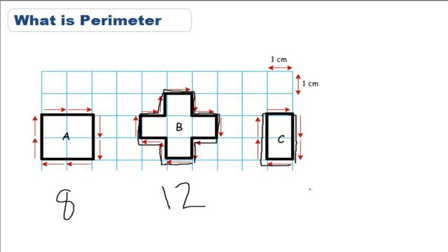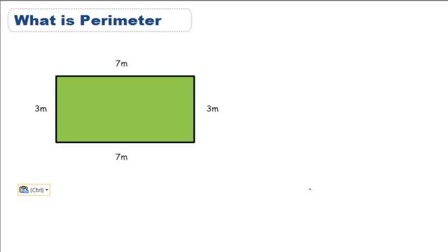Now, sometimes it's not going to be that easy, and we're not going to have our information on a grid, but rather in a word problem or some other sort of shape. So, here, all you need to do to find the perimeter of a polygon is add the sides together.